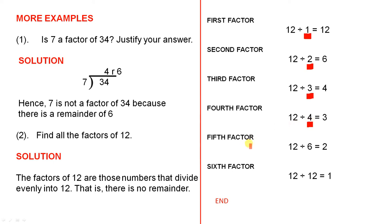The fifth factor: 12 divided by 6 equals 2, so the fifth factor is 6. And the sixth factor: 12 divided by 12 equals 1, so the sixth factor is 12.